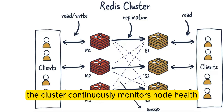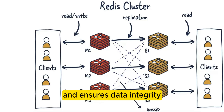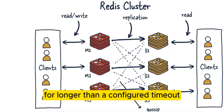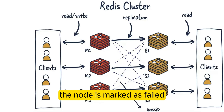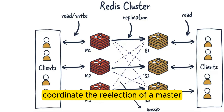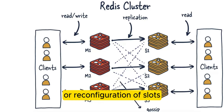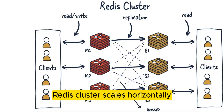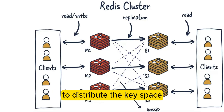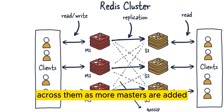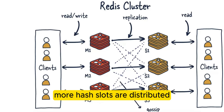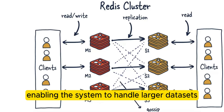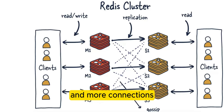The cluster continuously monitors node health and ensures data integrity. If a node is unreachable for longer than a configured timeout, the node is marked as failed and failover procedures begin. The remaining nodes coordinate the re-election of a master or reconfiguration of slots. Redis cluster scales horizontally by adding more master nodes to distribute the key space across them. As more masters are added, more hash slots are distributed, enabling the system to handle larger data sets and more connections.